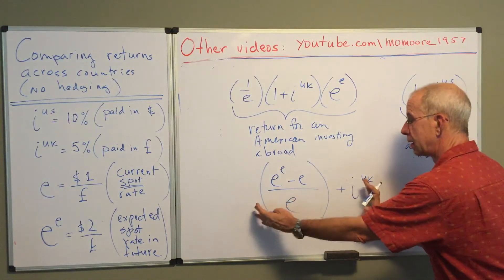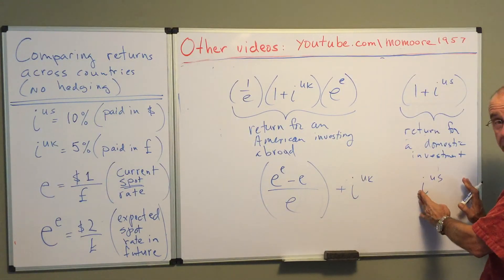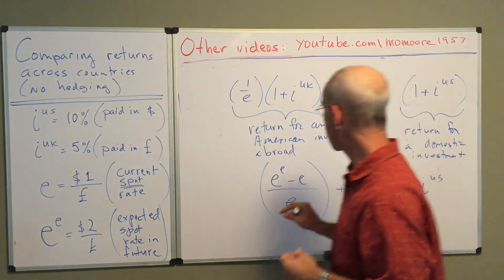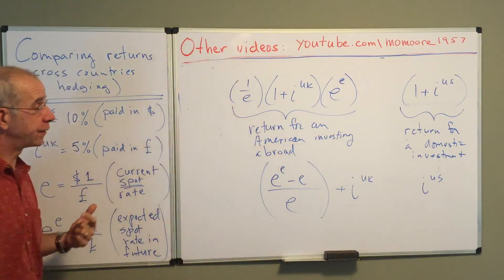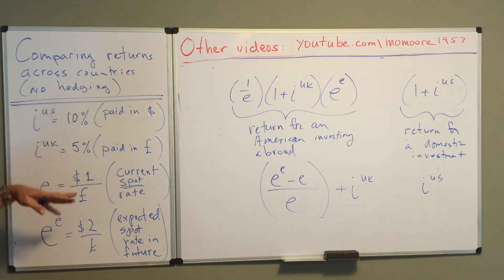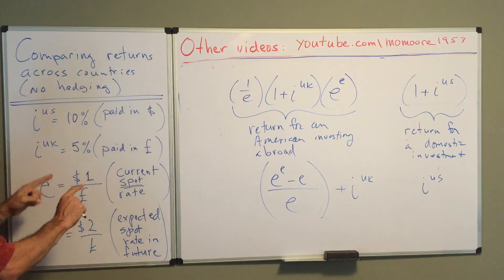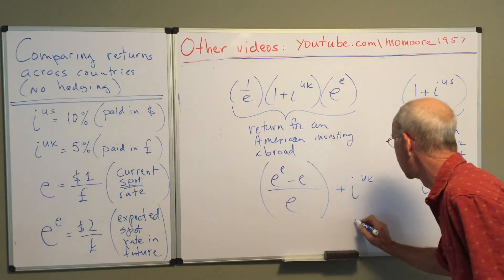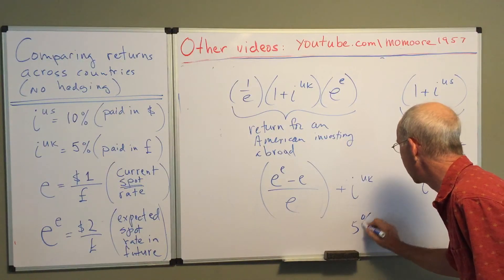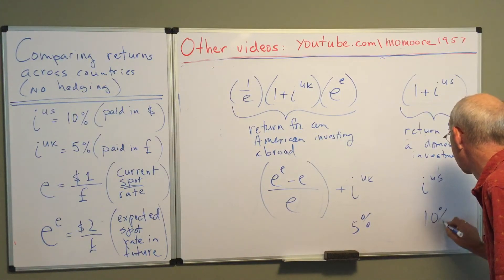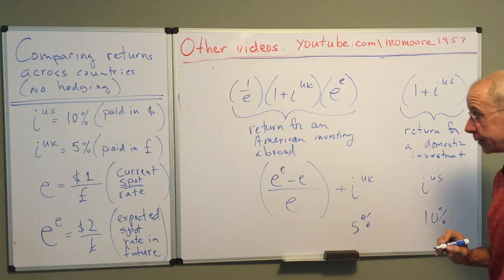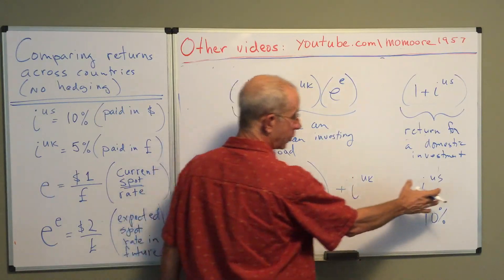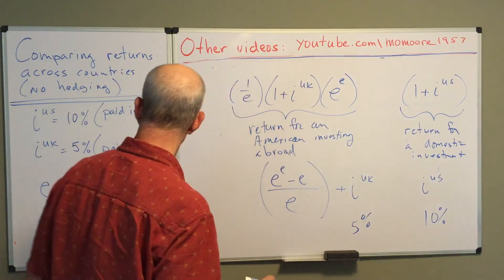If this is greater than that, then the UK investment is more attractive. Now, let's look at this from the standpoint of this example. So what we have here is that the UK interest rate is 5%. We've got the U.S. interest rate as 10%. So from this simple standpoint, the U.S. seems to be the better investment.